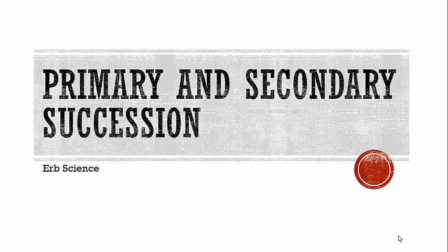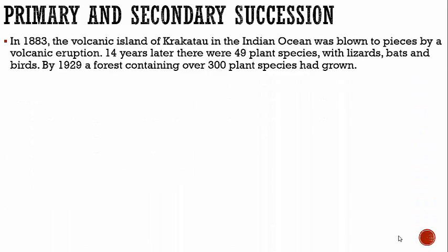Primary and secondary succession, continuing with ecology. In 1883, the volcanic island of Krakatoa in the Indian Ocean was blown to pieces by a volcanic eruption — literally blown to pieces.